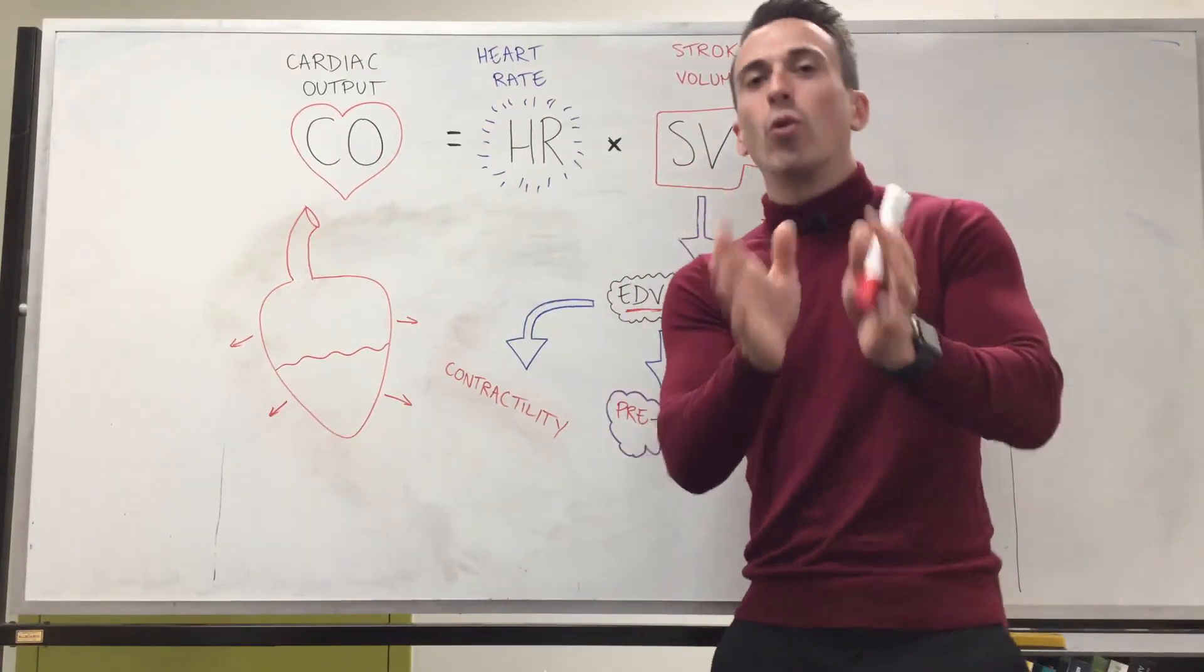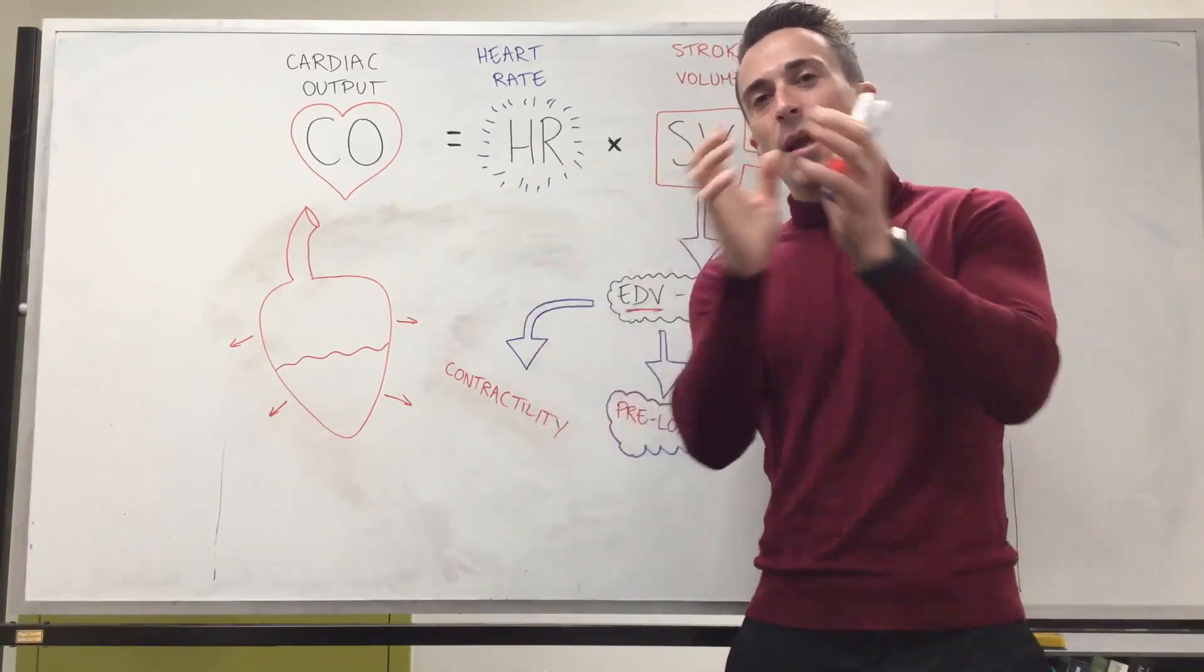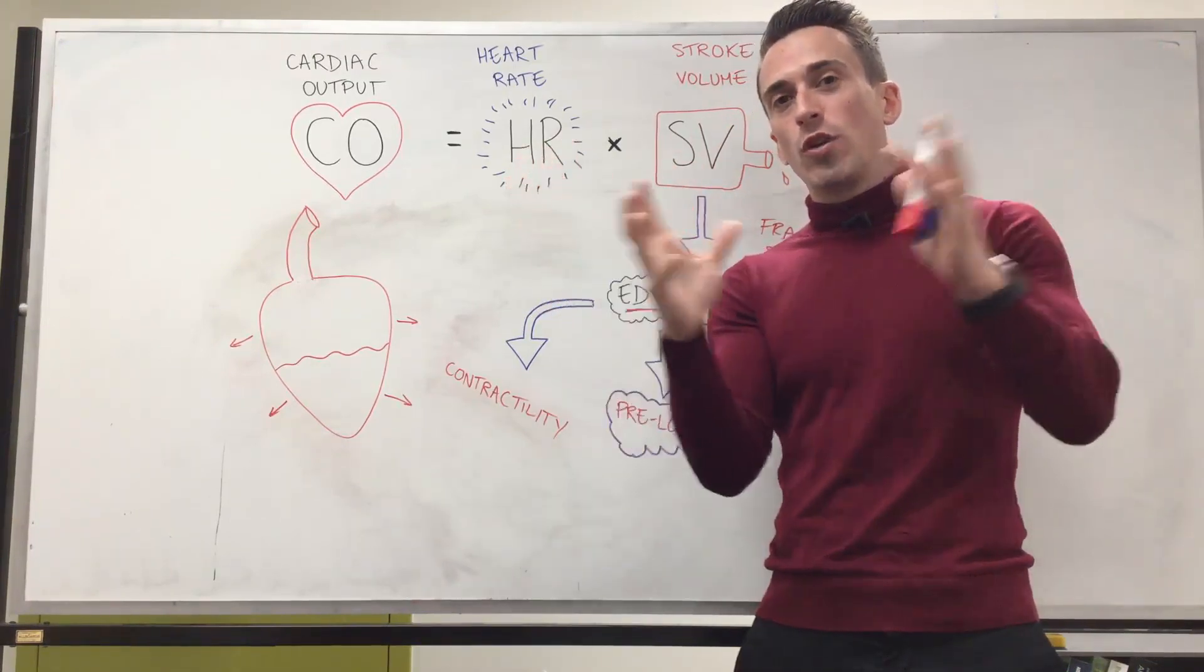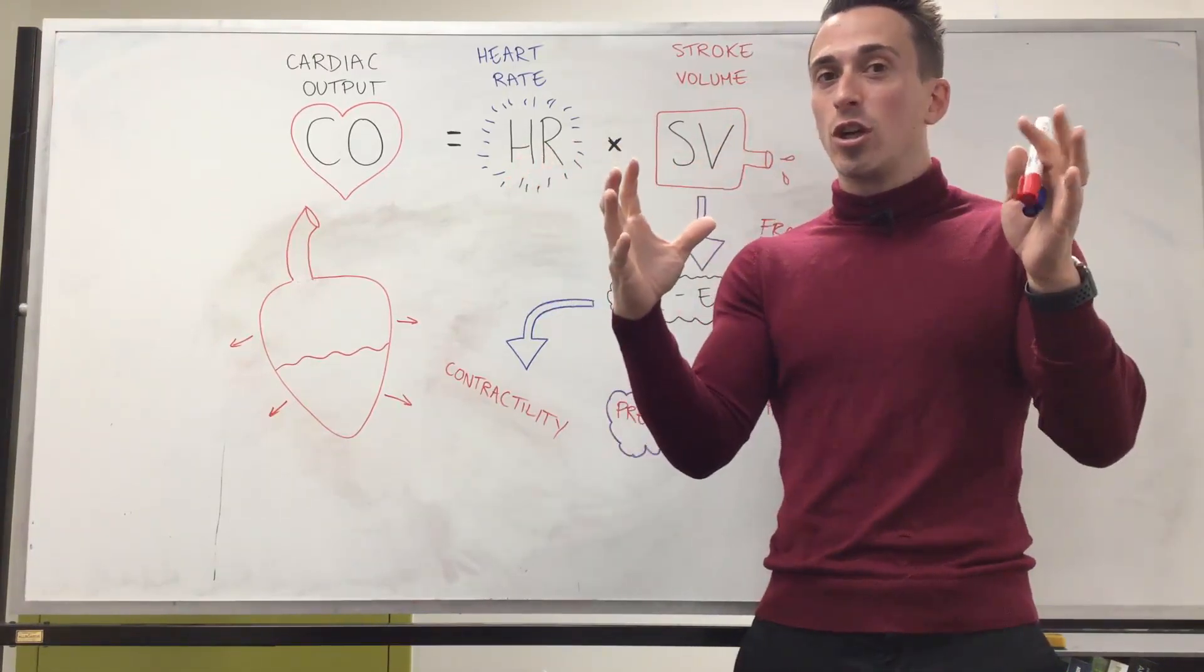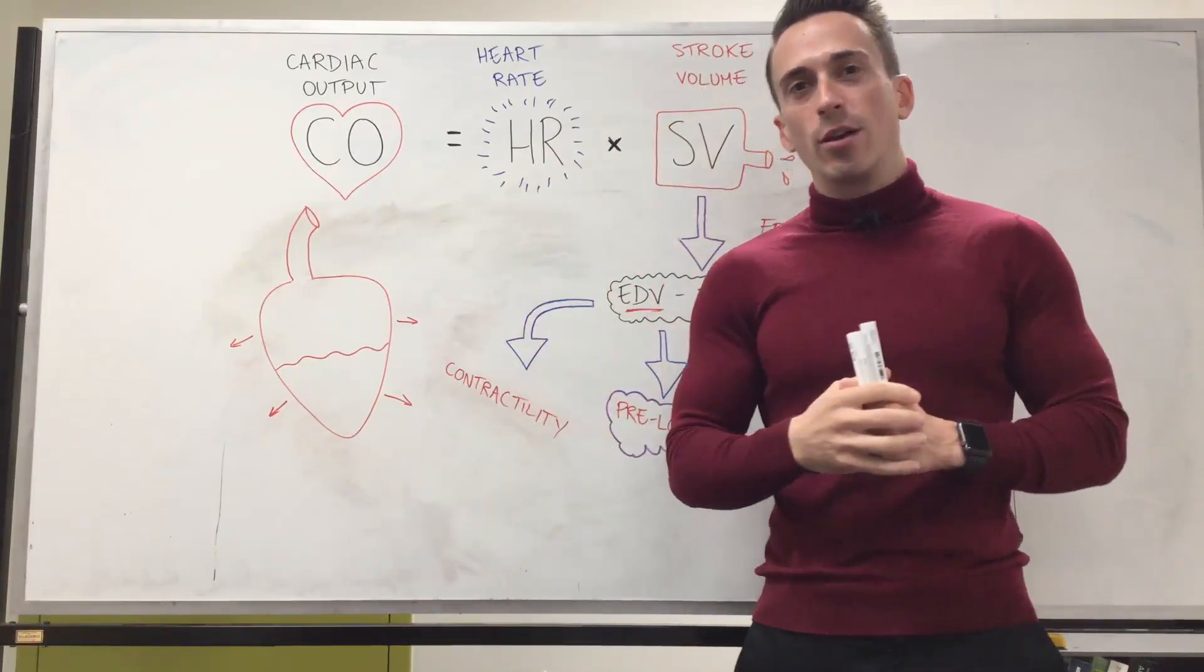So it is complex but all you need to be aware of is for preload it is the maximum stretch on the walls of the ventricles immediately before contraction. The greater the stretch, the greater the ejection, the greater the ejection, the greater the cardiac output. That's preload.